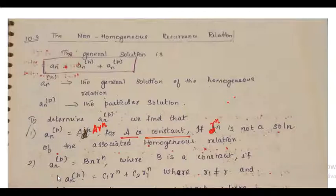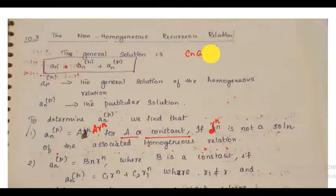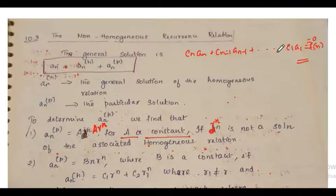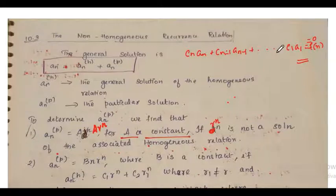In this topic, a non-homogeneous recurrence relation is a recurrence relation of the form: c(n)·a(n) + c(n-1)·a(n-1) + ... + c(1)·a(1) equal to some function f(n). If this expression equals 0, we call it a homogeneous recurrence relation. If it is equal to some non-zero function, then we say it is a non-homogeneous recurrence relation.